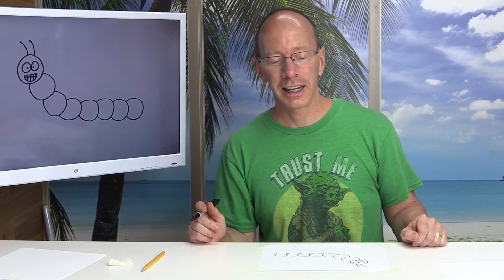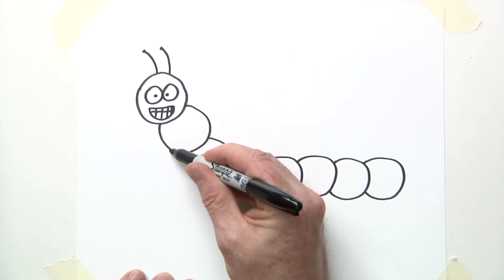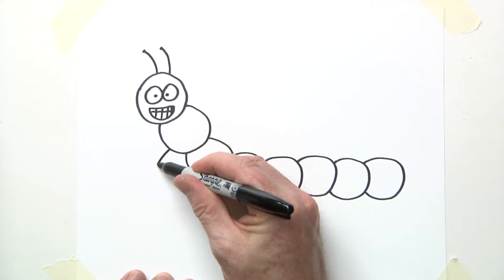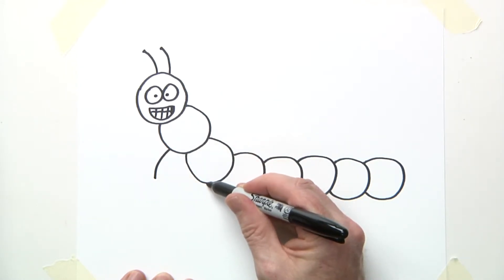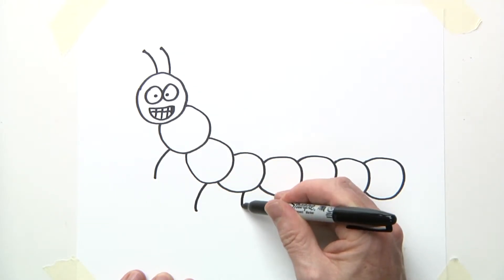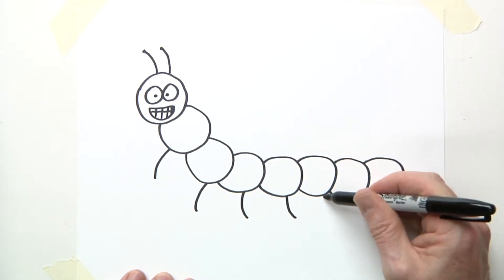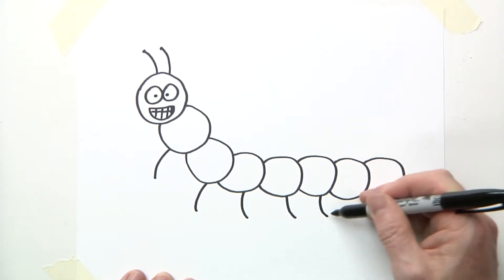Now we just got to add some legs. Now on each of these circles, what I want you to do is draw a short kind of curved line like this. And then go to the next one and draw a short curved line. Another curved line. Another one. It's just relaxing drawing, isn't it?